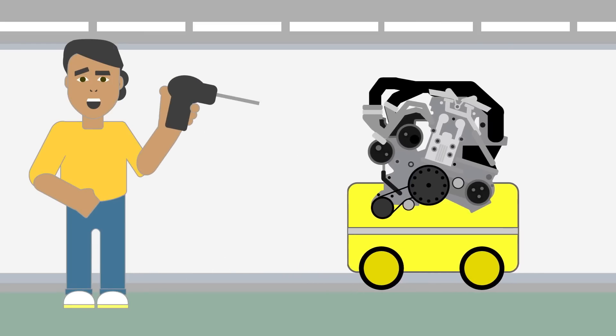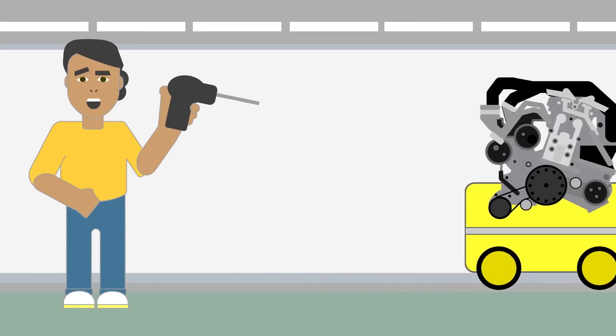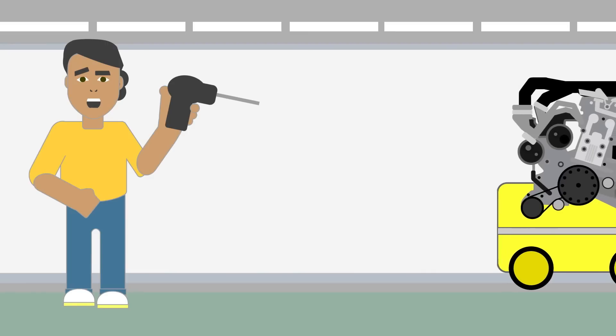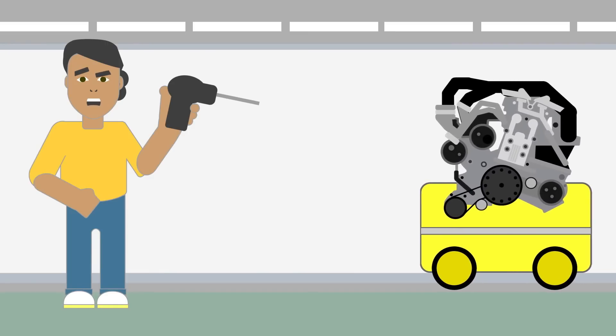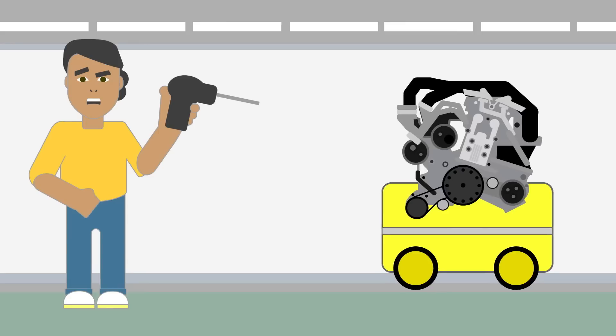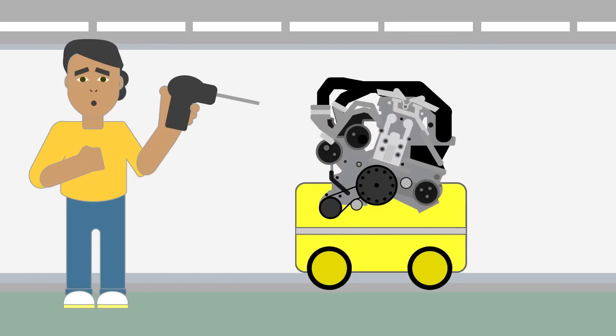When humans work side by side with robots, how they behave is important to us. If the robot moves too slowly, the human could get frustrated waiting around for it. If it moves too quickly, the human might get in the way.